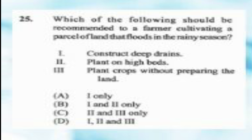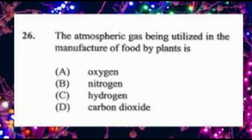Question number twenty-five: which should be recommended to a farmer cultivating land that floods in rainy season? One: construct deep drains. Two: plant in raised beds. Three: plant crops without preparing the land. A) one only, B) one and two only, C) two and three only, D) one, two, and three. The answer is B, one and two only, since preparing drains and beds constitutes land preparation.